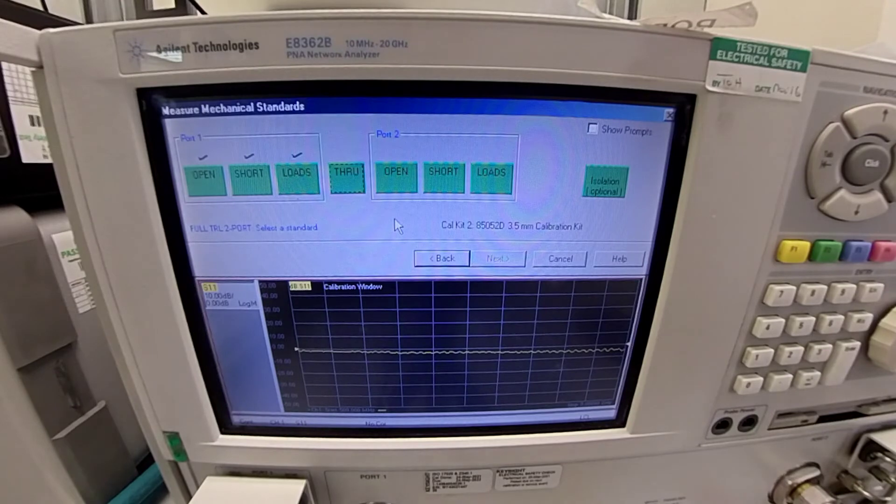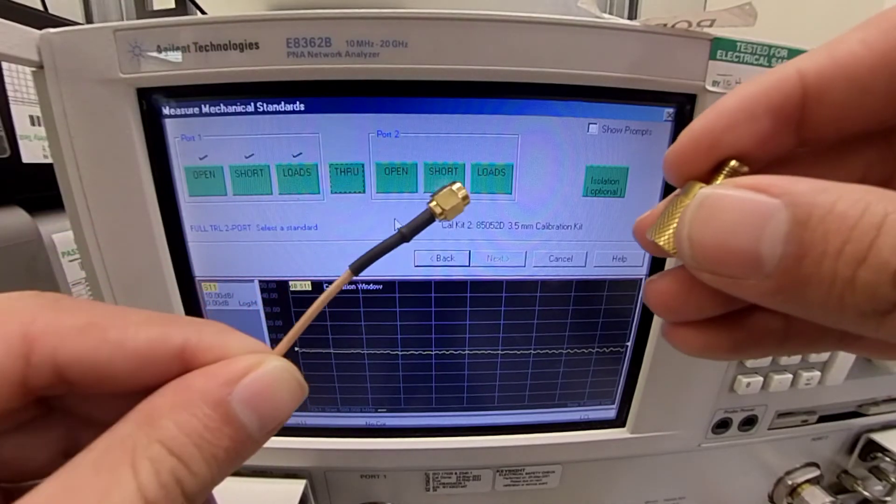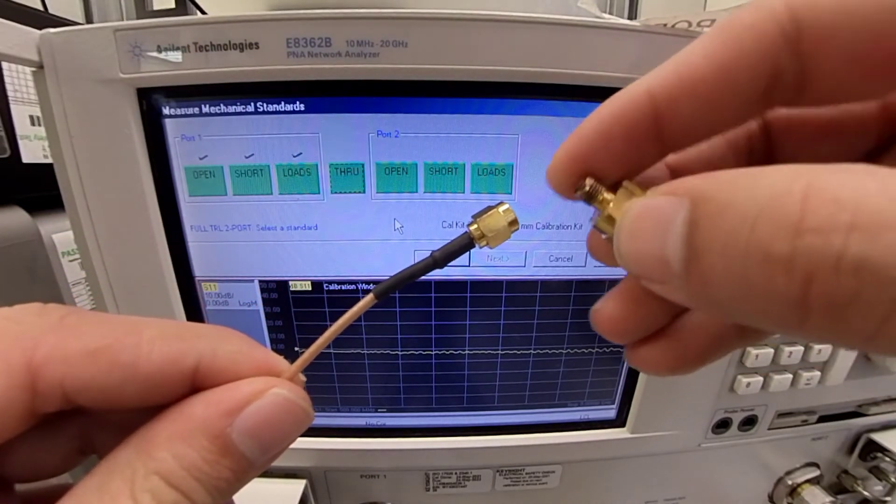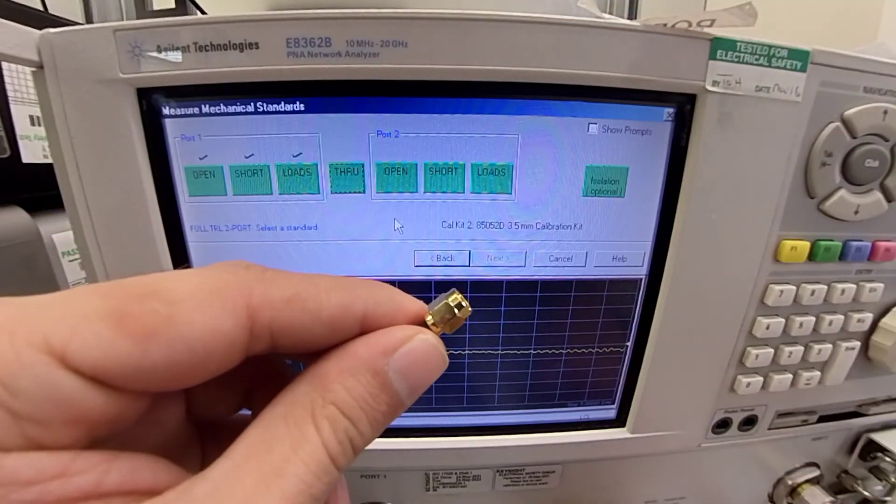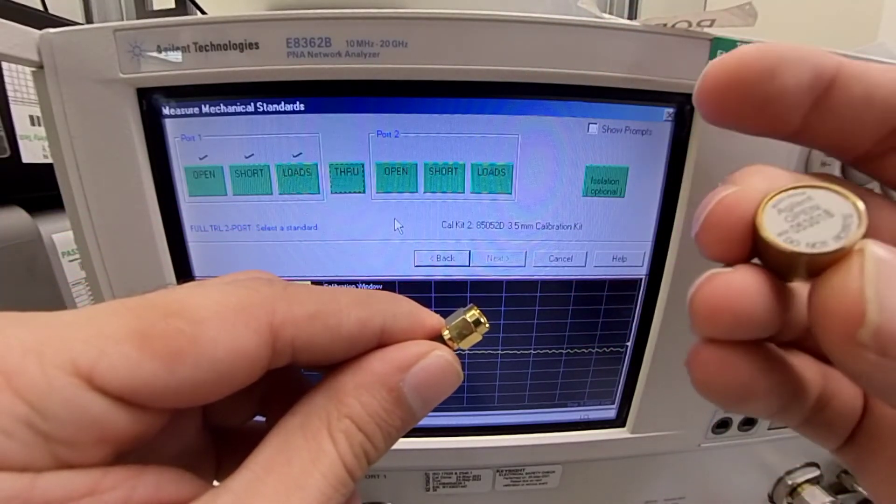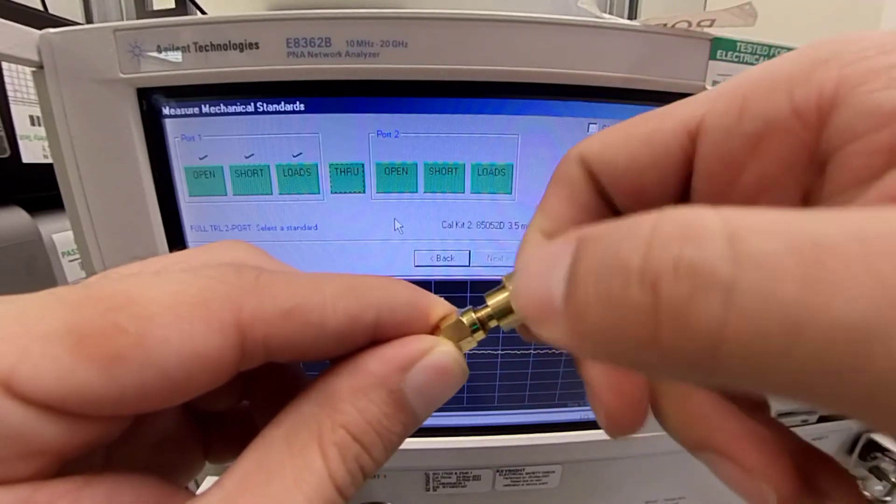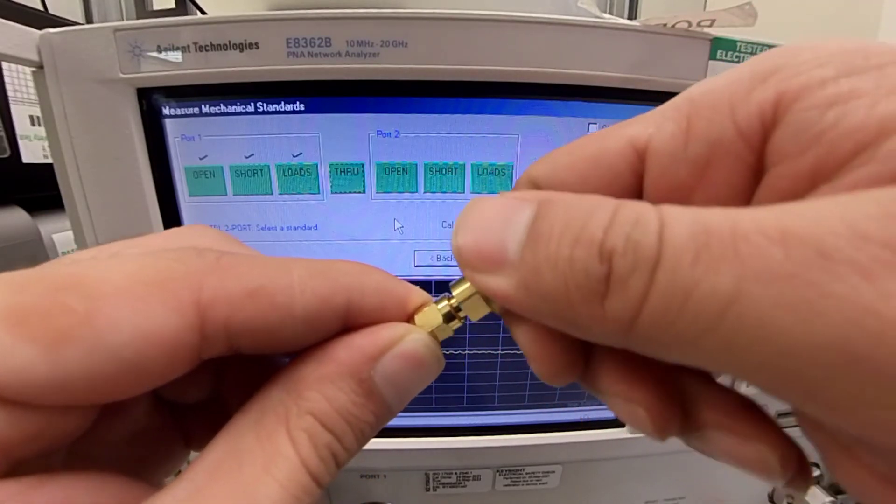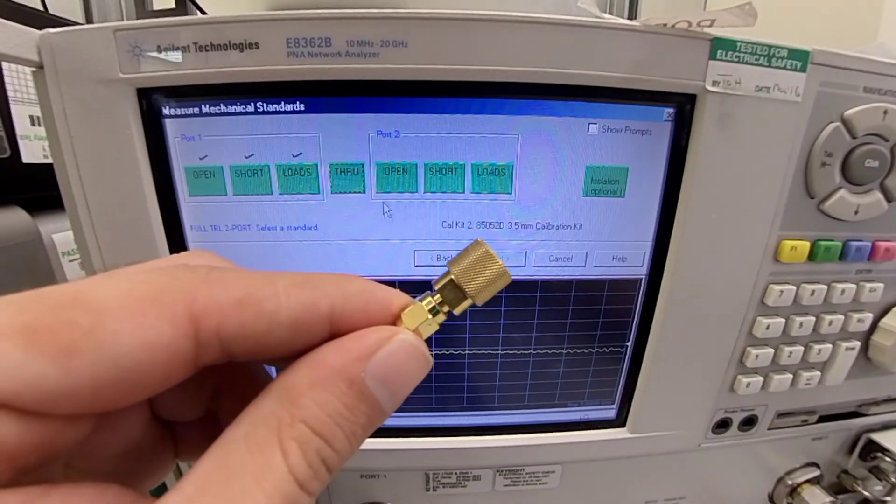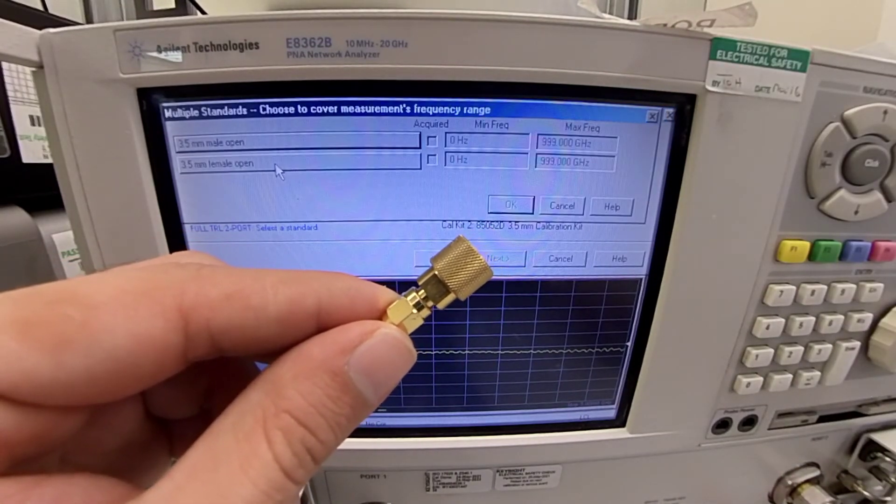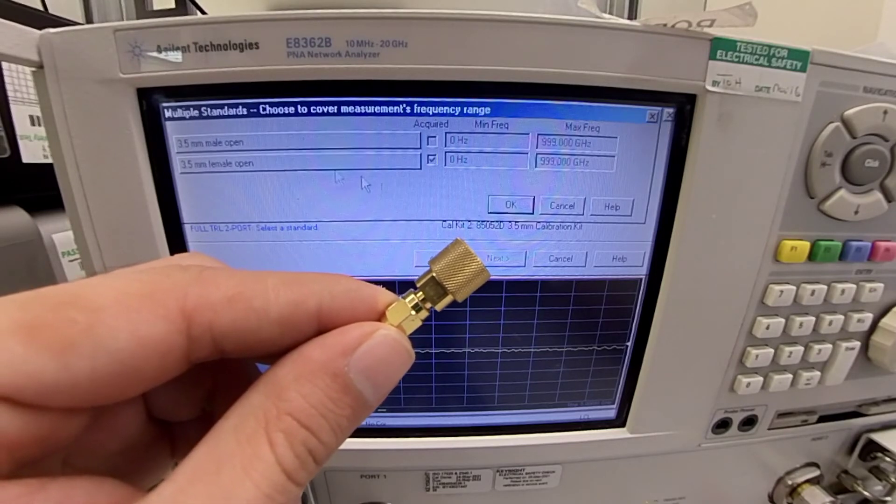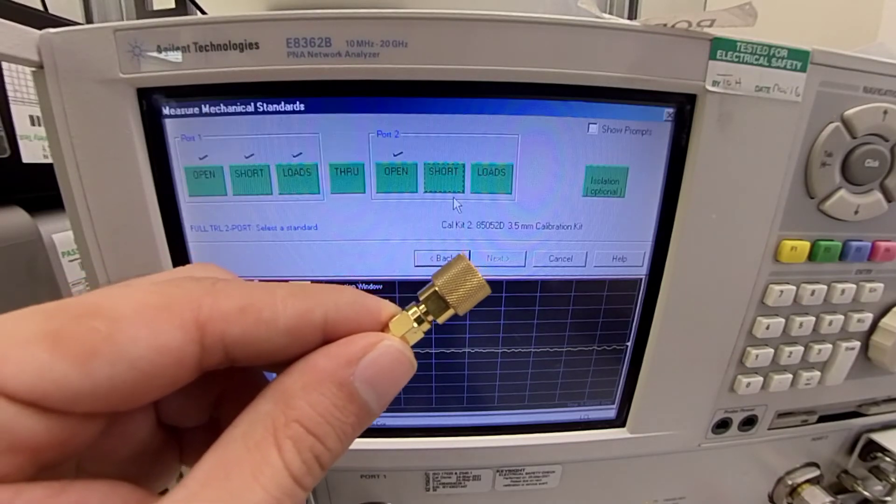For the second port, we select the cable connected to the second port, which is the brown cable in this video. And we start off again with an open circuit load. We select Open. Repeat the same procedure. Female, open. Press OK. And we are done with the open circuit.